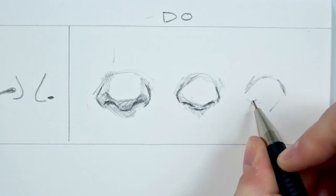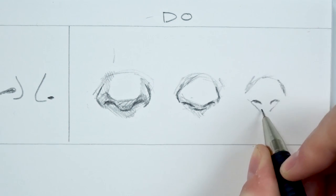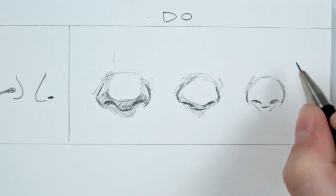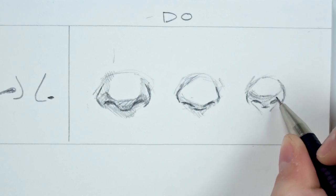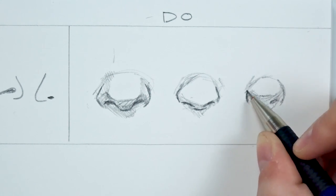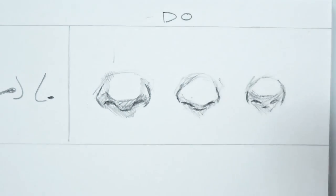What I really like about this technique is the fact that you can really mold the shape of the nose with the initial oval that you draw. You can draw it as wide as you want, as narrow as you want, as tall as you want. And this will basically help you create different types of noses.